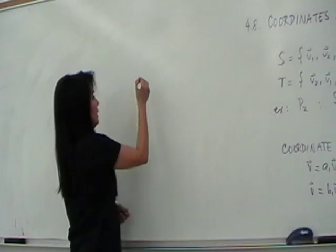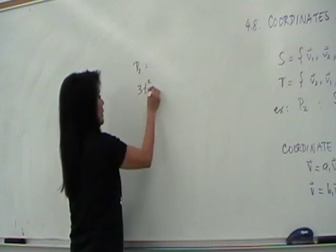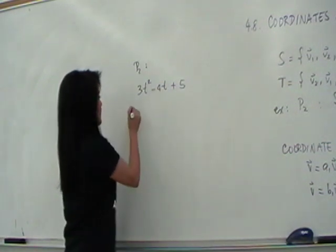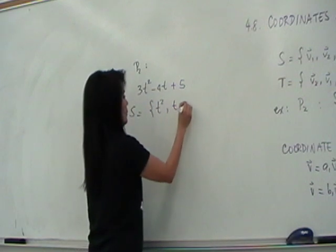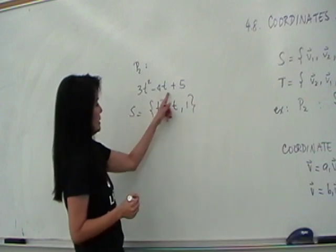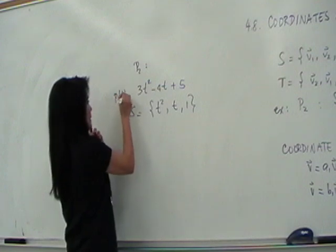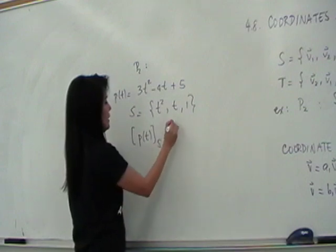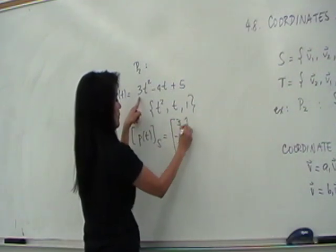So, for instance, if I have, let's say, in P2, I have the polynomial, let's say, 3T squared minus 4T plus 5. And let's say I consider my natural basis T squared T and 1. Now, this is the natural basis, so it's very easy to see what the coordinate vector of this is. So, let's call this P of T. Then we say the coordinate vector of P of T with respect to S is nothing but 3, negative 4, 5.